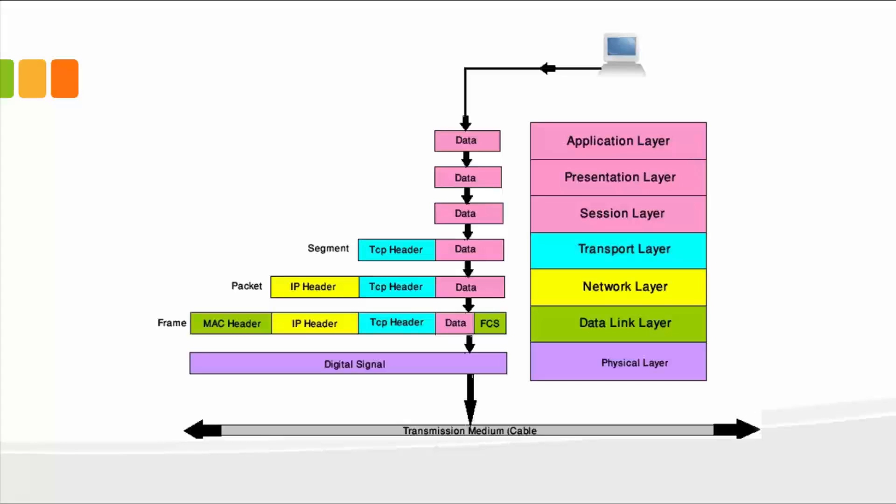When the data passes through each of these layers, each layer has a certain function. It does something to that particular data or the bits. So the top three layers, for instance, the application layer, presentation, and session...